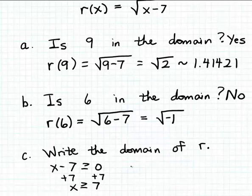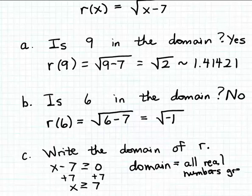So that includes, of course, 9, which we'd already discovered was in the domain, but doesn't include the number 6, which we already discovered is not in the domain. You can write that domain as an inequality: x greater than or equal to 7. You can also write it out in words: all real numbers greater than or equal to 7.